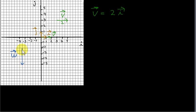Here is another example. We have this vector w — it's pointing vertically down, its magnitude is 3. We want to get it in terms of its i and j components, so we move it so that its tail is at the origin. You can see that it's actually a multiple of vector j. Vector j is pointing upwards, but if we reverse the direction of vector j we get vector minus j. That's got by multiplying vector j by minus 1. If we multiply by minus 3, we'll have vector w.